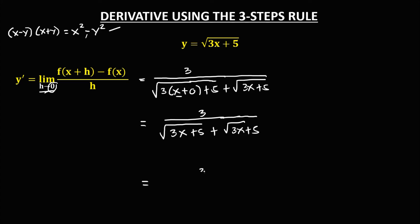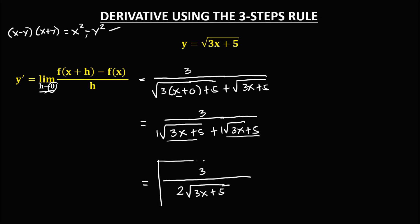For the final answer, we have 3 over — since both radicals are the same, we add the coefficients: 1 plus 1 equals 2 — so 2 times the square root of 3x plus 5. This is the derivative of the given radical function.